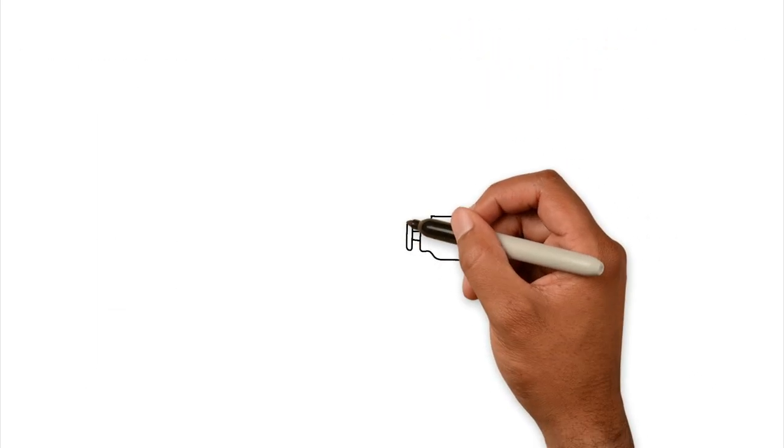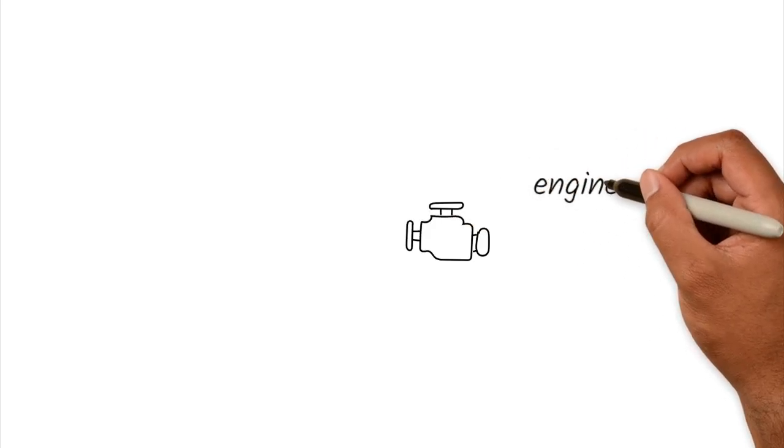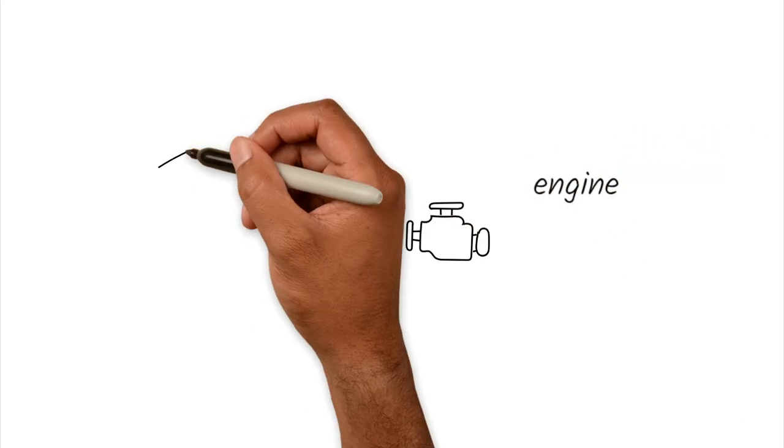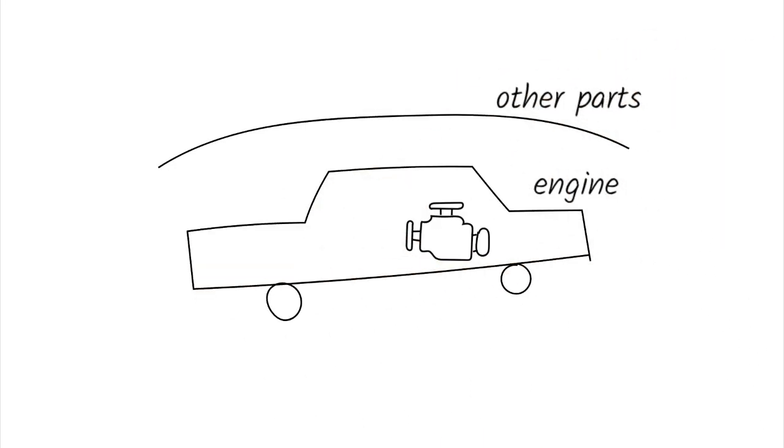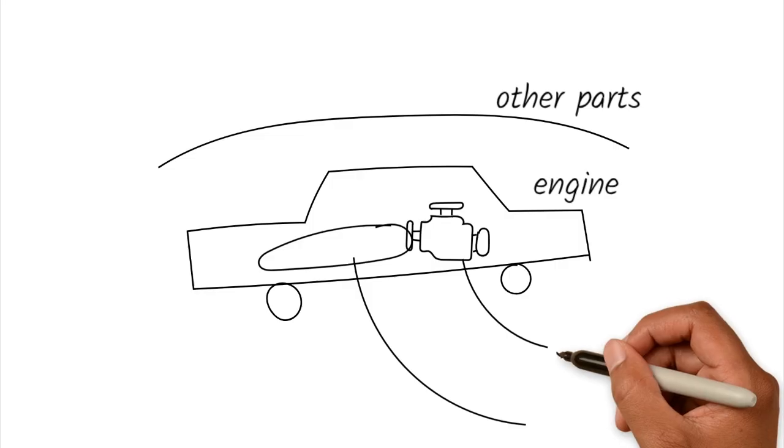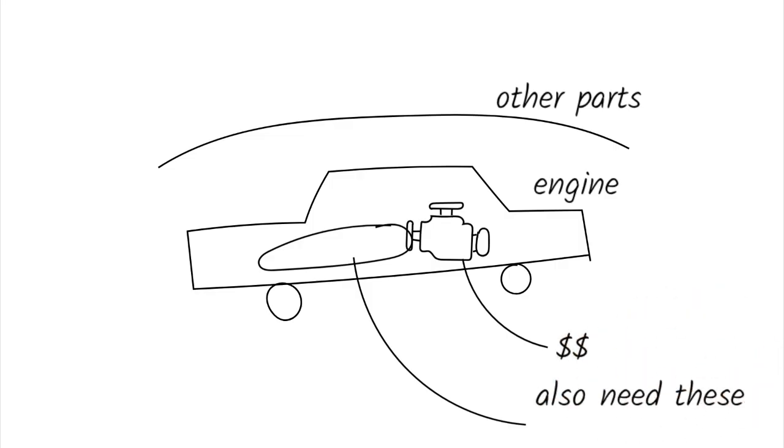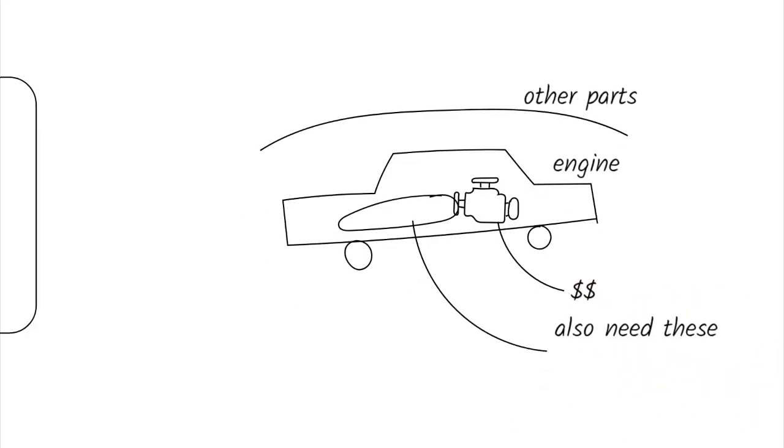To explain, let me give you a simple analogy. Imagine AI as the engine of a car. The engine is crucial, no doubt. It powers everything. But it's not the entire car. You wouldn't buy a car just because it has a high-powered engine and ignore everything else, right?